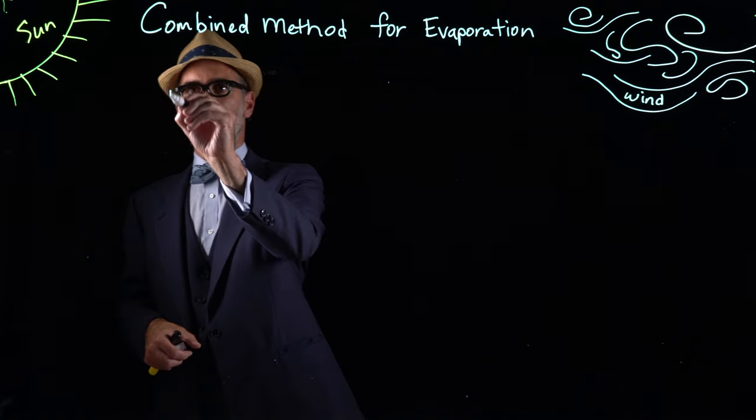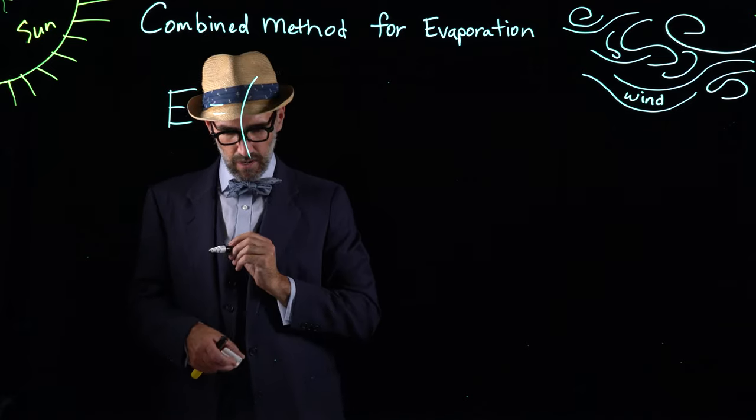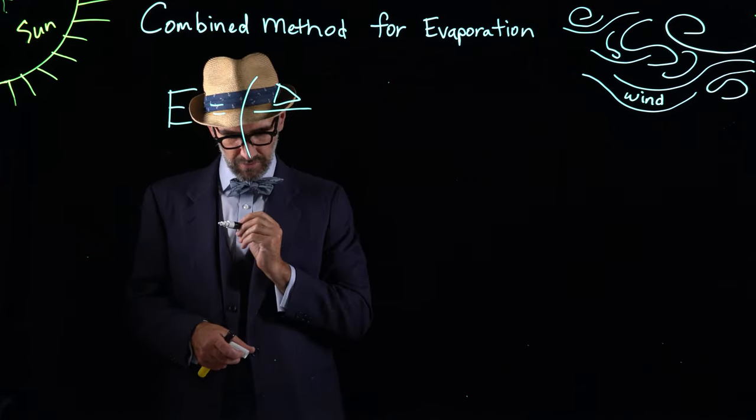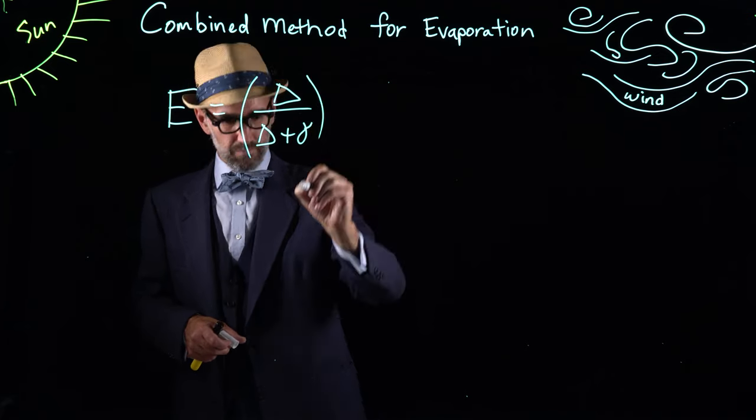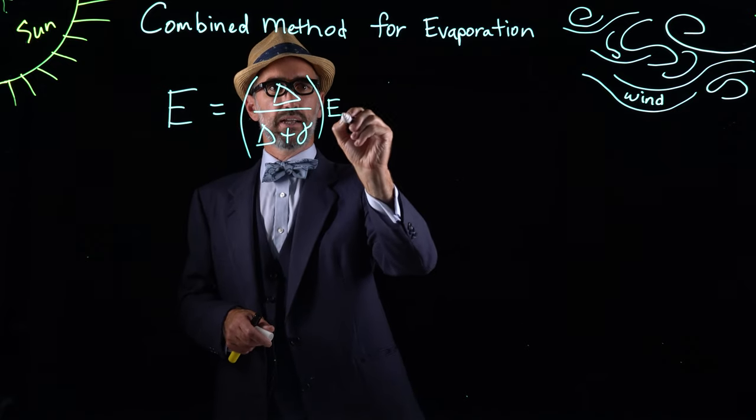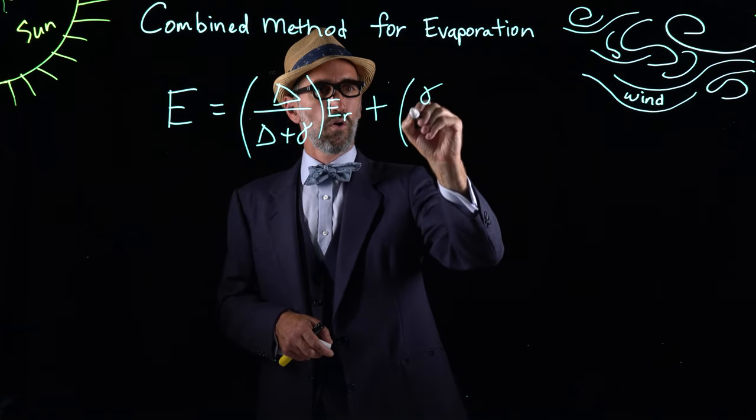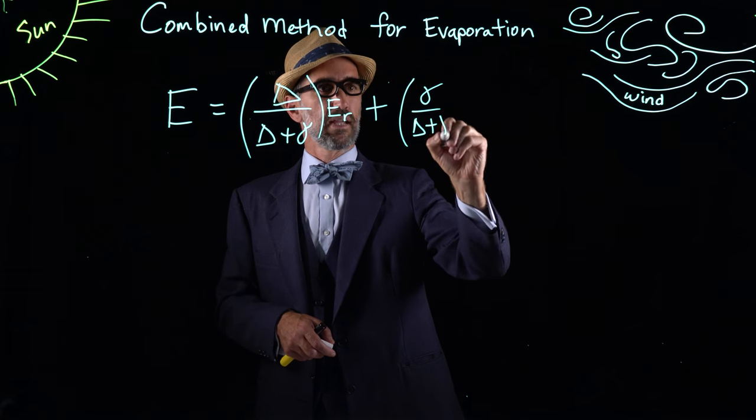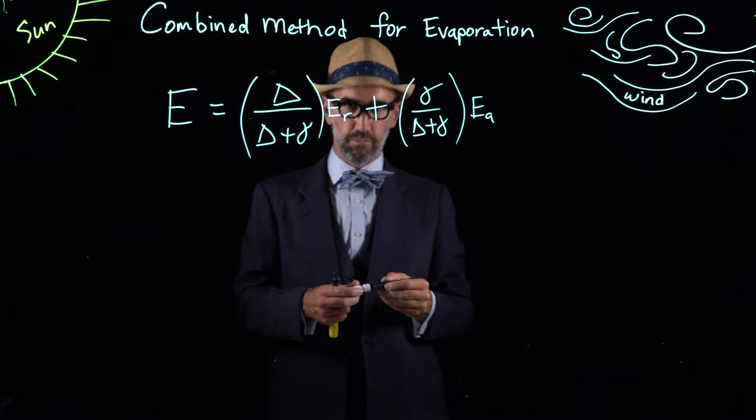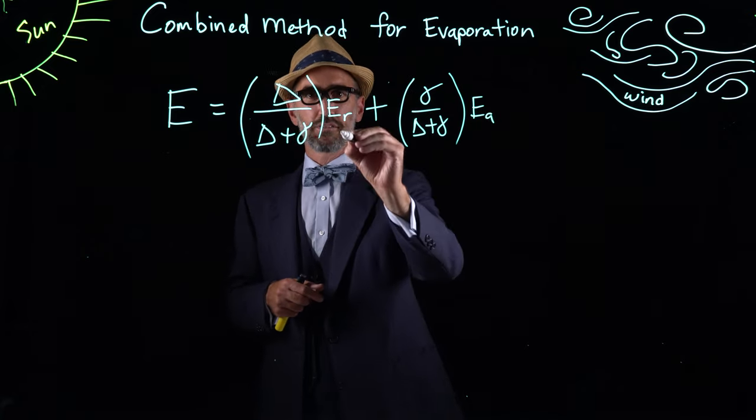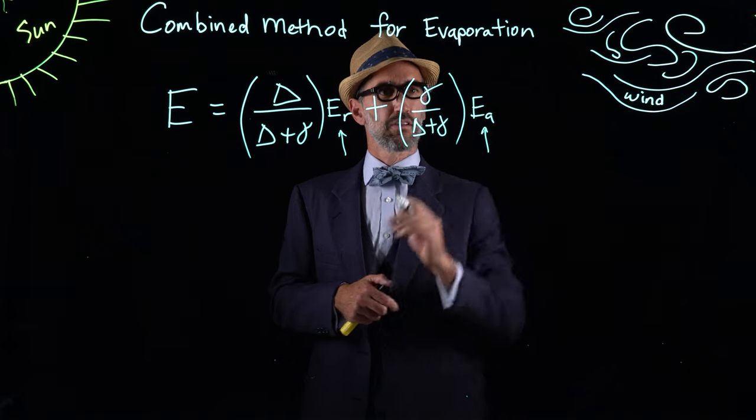Which is a function of delta over delta plus gamma multiplied by E sub r, plus gamma over delta plus gamma multiplied by E sub a. You can see that we're using the results from the previous calculation: the rate of evaporation from the energy balance method and the rate of evaporation from the aerodynamic method. We're modifying those with this delta and gamma.